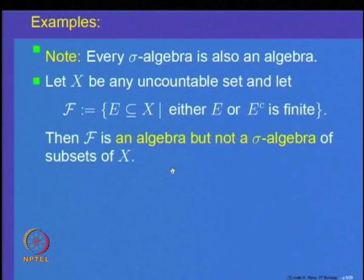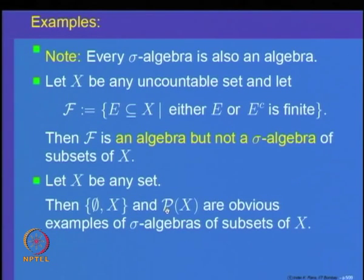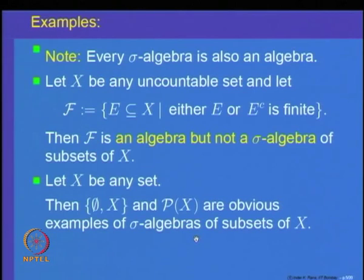Let X be any set. The collection {∅, X} is a sigma algebra since there are only two elements, their unions belong, and it is closed under complements. Also, the power set P(X) is a sigma algebra of subsets of X since it is closed under all operations. These are called the obvious or trivial examples of sigma algebras of subsets of X.